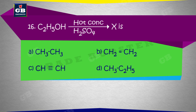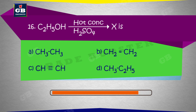C2H5OH in the presence of hot concentrated H2SO4 gives rise to X. X is: a) CH3–CH3, b) CH2=CH2, c) CH≡CH, d) CH3C2H5.